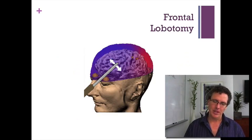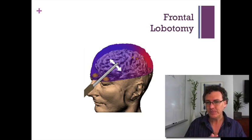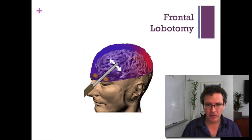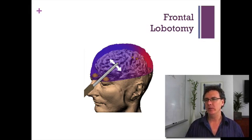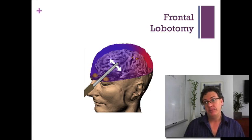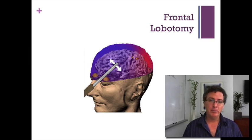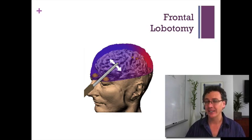So we know what the motor strip is doing — it's outputting motor actions. But what's the rest of the frontal lobes doing? One of the ways we know a lot about the frontal lobes is through things called frontal lobotomies, which you've probably heard of. Frontal lobotomies were popular as a psychiatric treatment before drugs became as prominent as they are today.